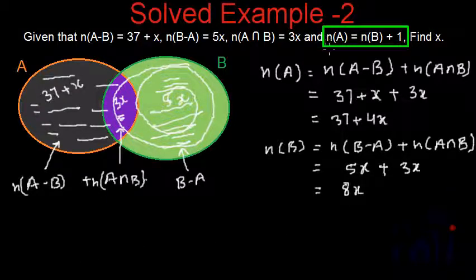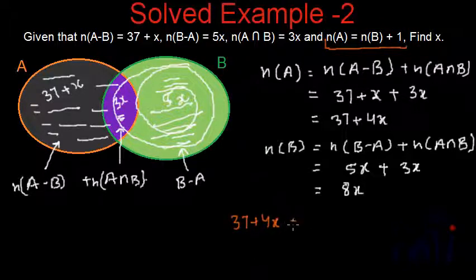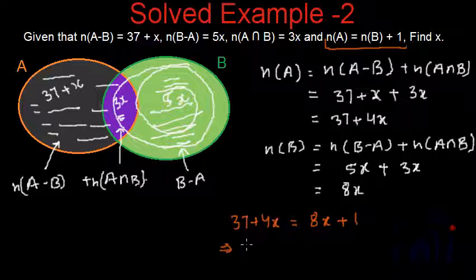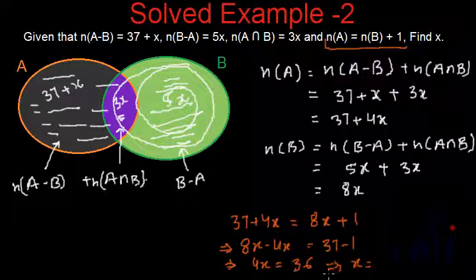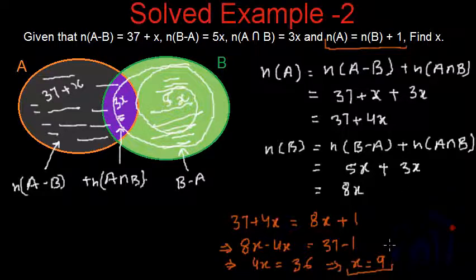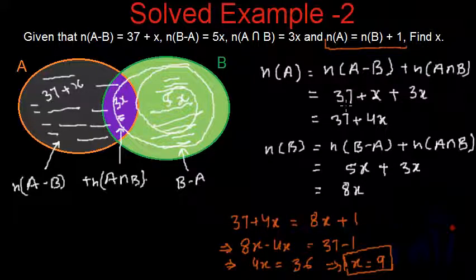We are given that n of A is equal to n of B plus 1. That means 37 plus 4x is equal to 8x plus 1. Rearranging: 8x minus 4x equals 37 minus 1, so 4x equals 36, and therefore x equals 36 divided by 4, which is 9. We have found the value of x. With x equal to 9, we could also calculate all the individual cardinal numbers, but finding x was the objective.